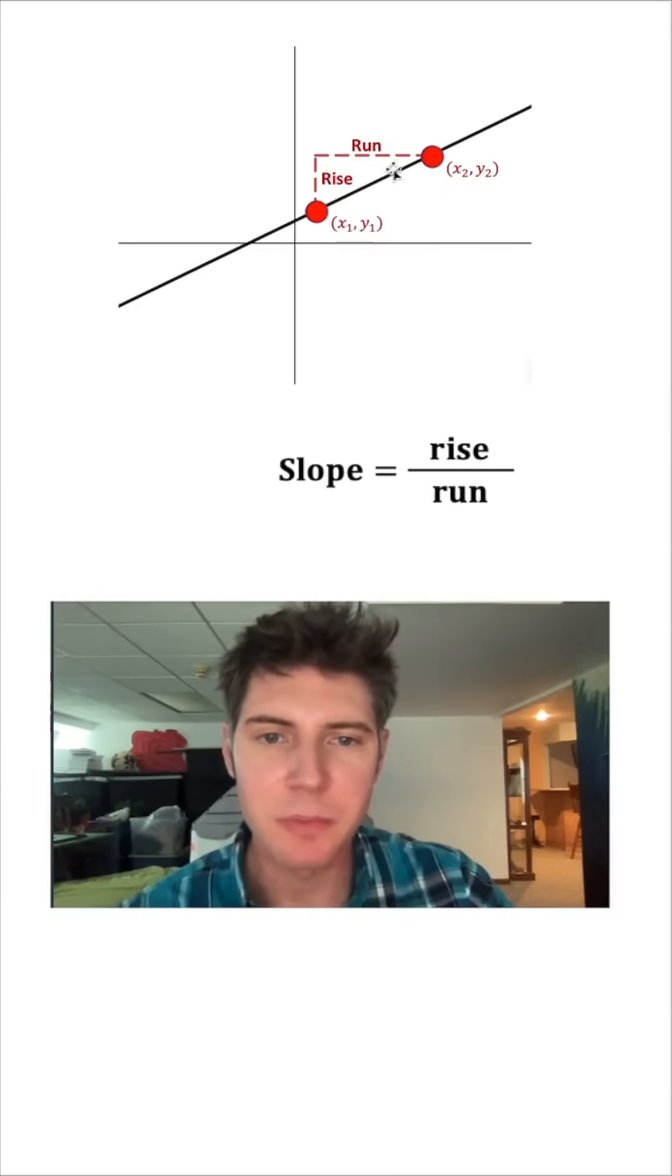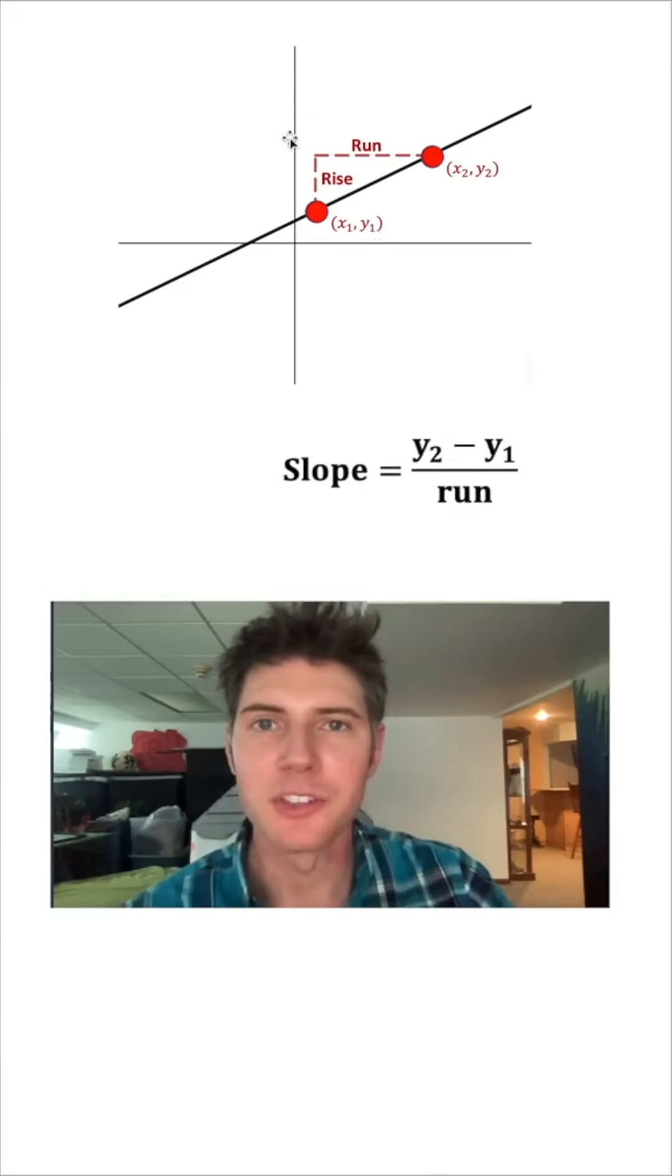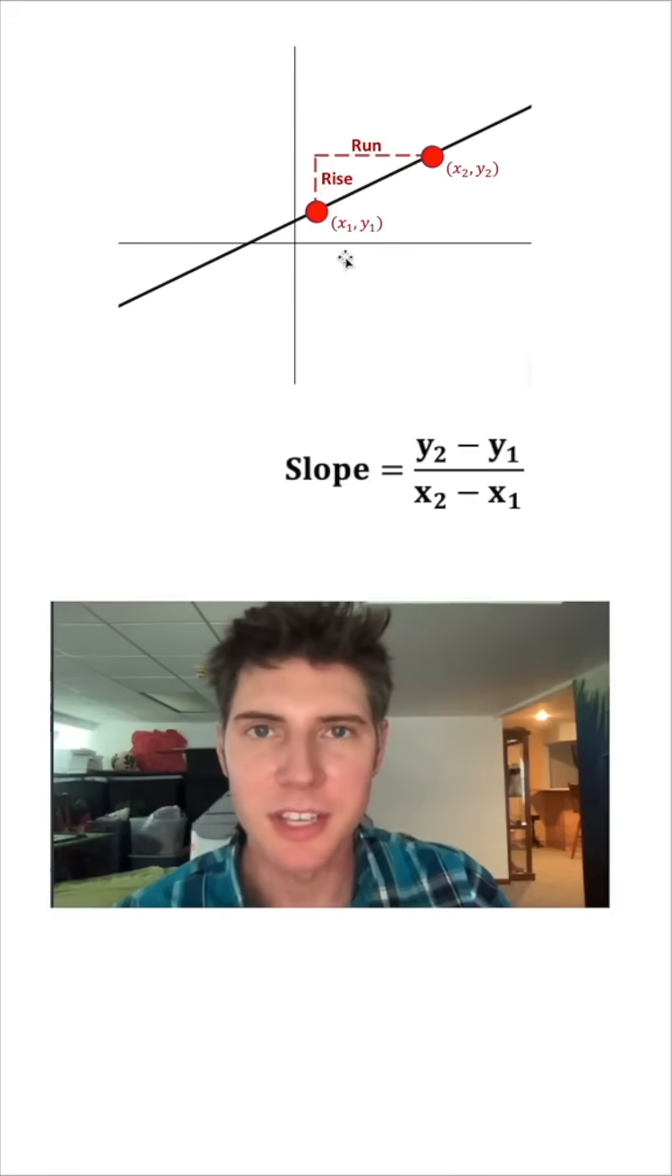This rise is whatever the height of this point is minus the height of this point. That's y2 minus y1. And this run is however far over this point is minus however far this point is. So that's x2 minus x1.